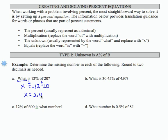Looking at part b, again we have what, that's going to be an x, is equals 30.45% as a decimal is .3045, we're dividing 30.45 by 100, of is times, and 450 is our number.